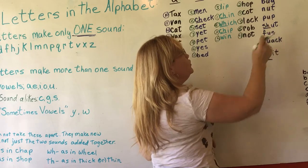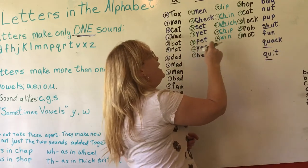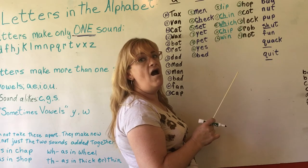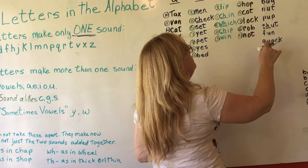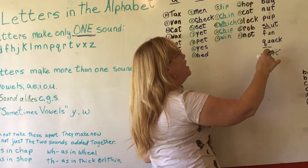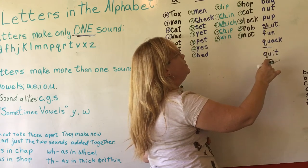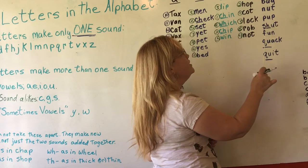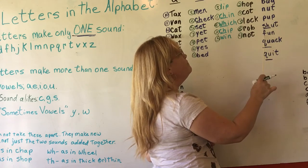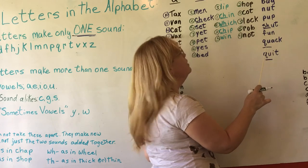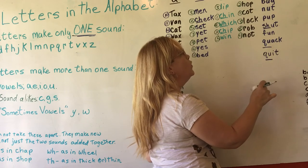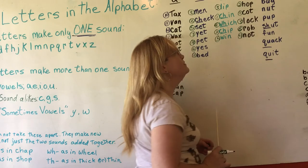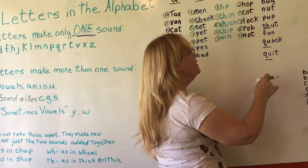Now let's go to U — 'up.' We have: B-U-G — bug. N-U-T — nut. P-U-P — pup. S-H-U-T — shut (SH stays together). F-U-N — fun. Q-U-A-C-K — quack. Q-U-I-T — quit.